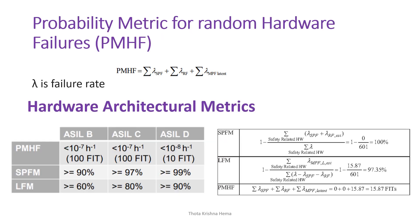PMHF is the probability metric for random hardware failure. PMHF = Σλ_SPF + Σλ_RF + Σλ_MPF_latent, which is the sum of these failure rates, and the outcome is a number. The SIL/SIL levels have goal values for PMHF, SPFM, and LFM metrics. If you like this concept, click the like button. For more automotive videos, subscribe to the channel. Thank you.